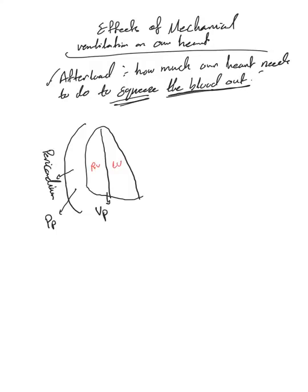To review this quickly, this is our heart with RV and LV, and this is the pericardial space. At equilibrium, usually the ventricular pressure is equivalent to pericardial pressure plus the trans-cardiac pressure.